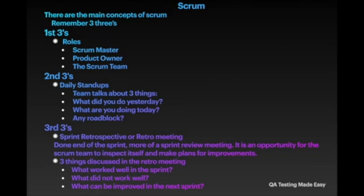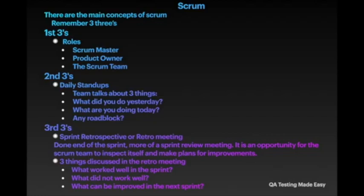The Scrum team is a self-organizing, cross-functional group — developers, QA, design, Scrum master, and product owner. The team has authority to make decisions on how to perform the work, such as breaking work into tasks. Team size should be small — recommended seven to nine people. The second three: daily standups. The team discusses three things: what did you do yesterday, what are you going to do today, and any roadblocks. This covers what ticket you worked on, what you'll work on next, and any blockers.